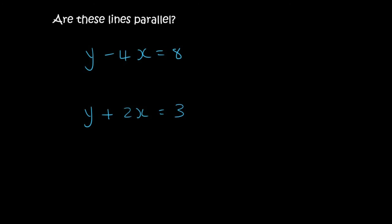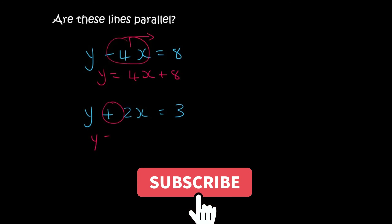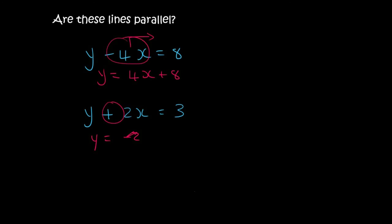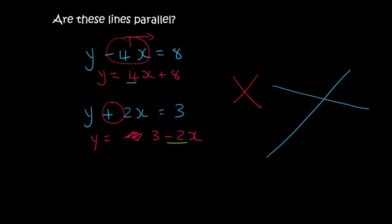Here's the next one. Are these two lines parallel? First step is to get them in standard form — we can't say anything until we've done that. So the minus 4x needs to move over to the right where it becomes positive, giving us y equals 4x plus something. The positive 2x needs to move over to the right where it becomes negative, giving us y equals negative 3 minus 2x. Now we can compare: the number in front of x in the top is 4, and in the bottom it is minus 2. They are different, so these two lines are not parallel — they would cross over each other.